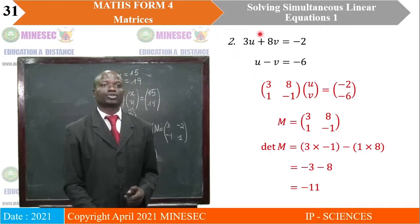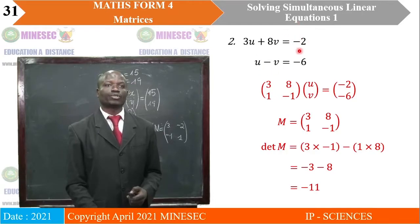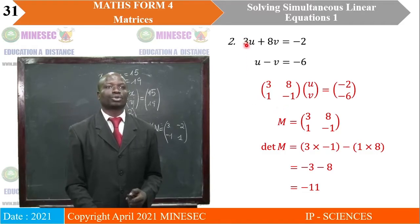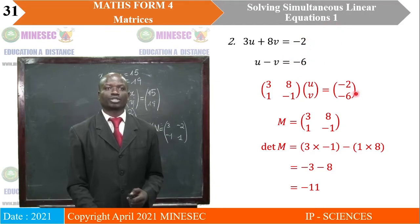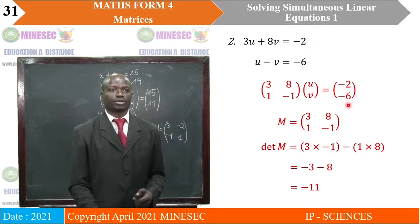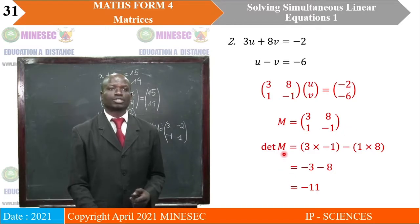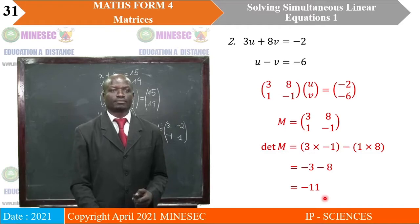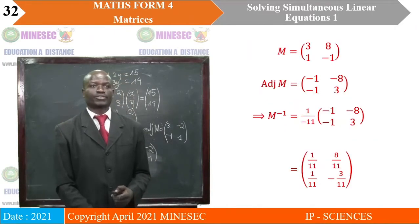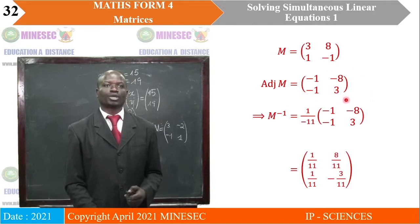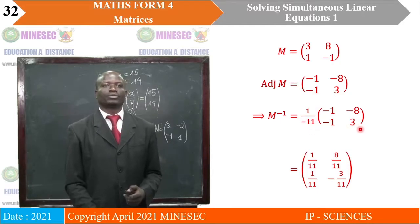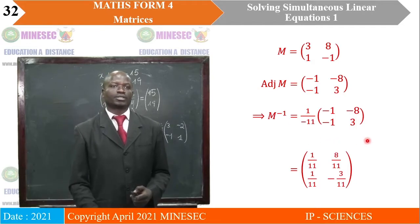In the next case, we form the matrix equation for the equations with unknowns u and v. Matrix M = [3, 8; 1, -1], times [u; v], equals [-2; -6]. The determinant of M is solved to give -11. To find M inverse, we find the adjoint, and M inverse is 1 over -11 times the adjoint, giving us that matrix.